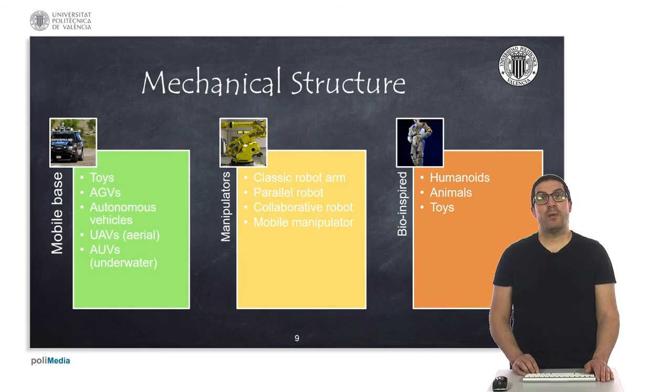And as you already know, robots have different mechanical structures. So there are some that they have the appearance of a vehicle with a mobile base, such as is the case of some robotic toys, AGVs, which are automated guided vehicles, autonomous vehicles or UAVs or AUVs, among others. This type of robots, they have the main characteristic that they have the ability to move in certain specific environments. For instance, if they have wheels, they will be able to move in terrain environments, plain terrain environments.